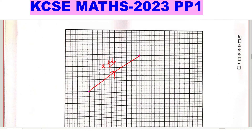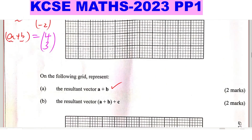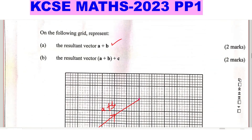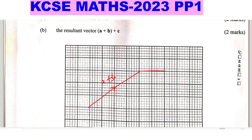Now we need to add C. We get C from its column vector: 2, negative 2. At the end point of A plus B, we count 2 squares to the right, then negative 2 meaning downwards. So the vector C will be represented like this. That will be vector C — displacement on the X axis to the right is 2, then downwards on the Y axis, negative 2. Therefore, A plus B plus C is found by joining from the starting point of A plus B to the end point of C, using a ruler of course. So this is A plus B plus C.